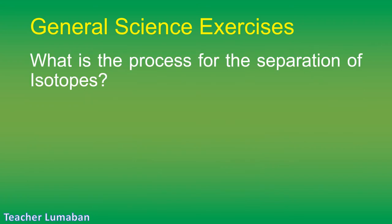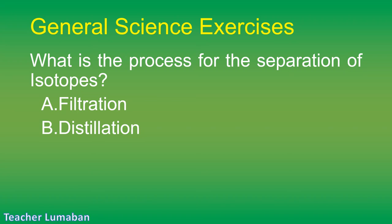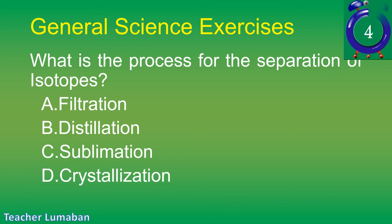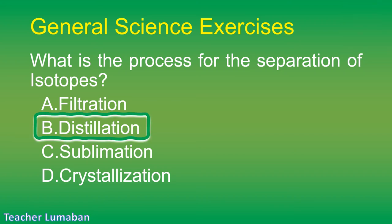What is the process for the separation of isotopes? Letter A: filtration. Letter B: distillation. Letter C: sublimation. Letter D: crystallization.